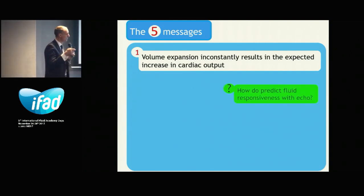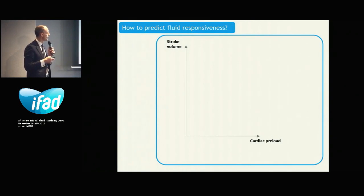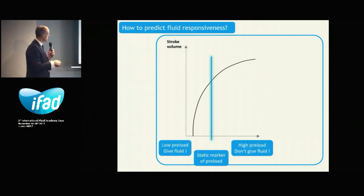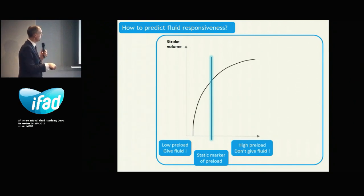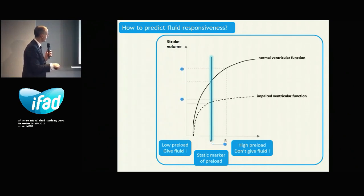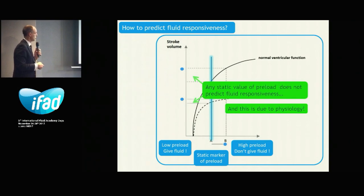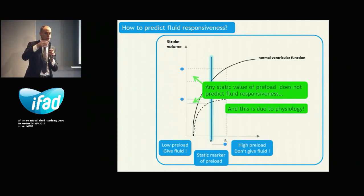The logical question is how to predict fluid responsiveness. The wrong way, used for many years, was to use static markers of cardiac preload — for instance, central venous pressure: if it's low, give fluid; if it's high, don't. But this doesn't work, because basic physiology tells us that a given static value of preload does not allow you to predict fluid responsiveness. Preload responsiveness is not preload, and preload is not preload responsiveness.